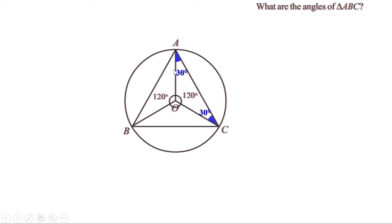In the same way, triangle AOB is another isosceles triangle and these are the equal sides. So the angles opposite to them are also equal — these two angles are equal. Since this angle is 120, the sum of the other two angles is 60. And since they are equal, each angle is 30 degrees.